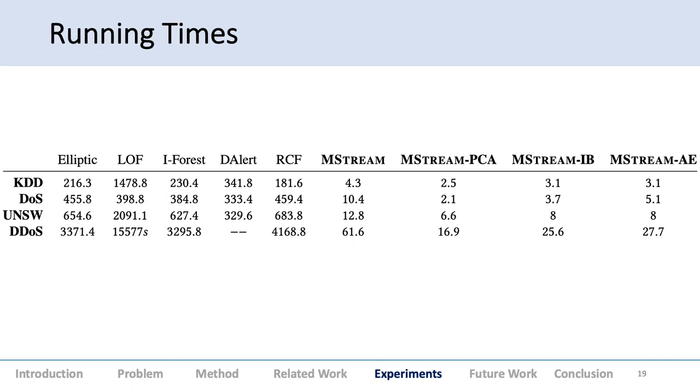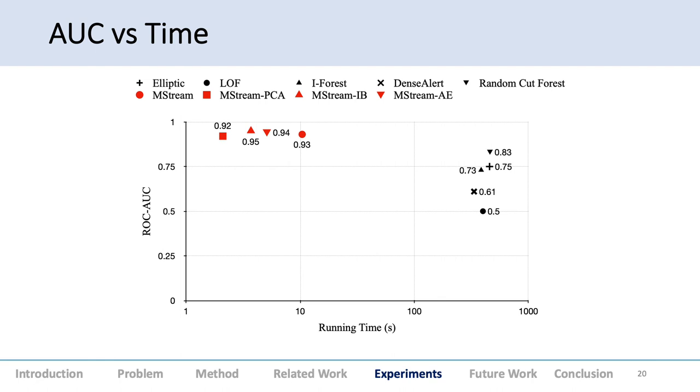For running times, we observed M-STREAM is at least two orders of magnitude faster than all baselines on all datasets. It's quite fast and gives real-time performance. This slide combines AUC versus running time on log scale. We see you're quite better in AUC with up to two orders of magnitude speedup—that's a significant gain.